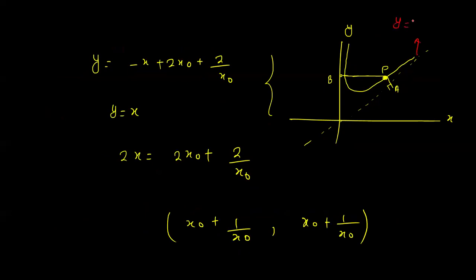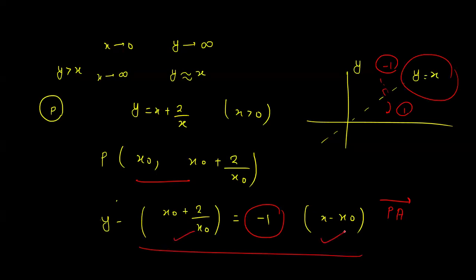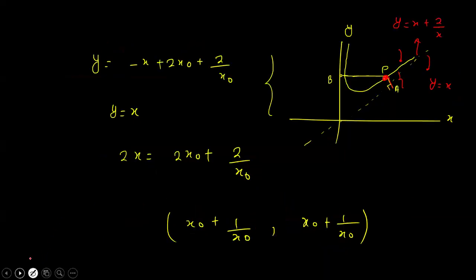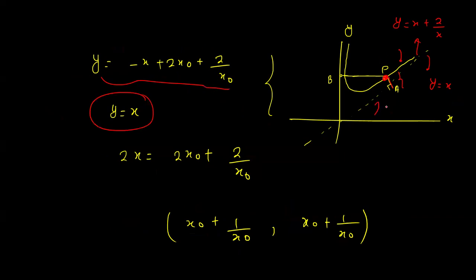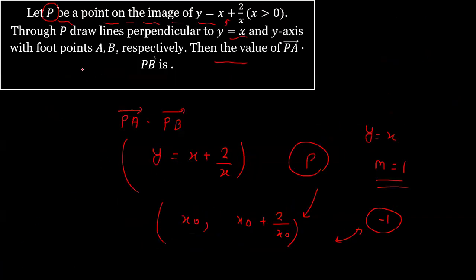The curve is y = x + 2/x, and point P lies on this curve. We draw a line perpendicular to y = x, so we find the equation of line PA. Using point P and slope −1, the equation comes out as y = −x + 2x₀ + 2/x₀. The perpendicular line PA meets y = x at foot point A.